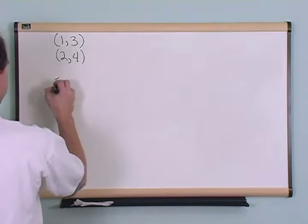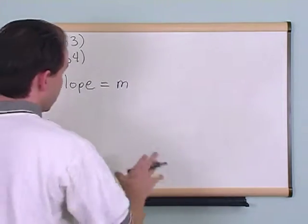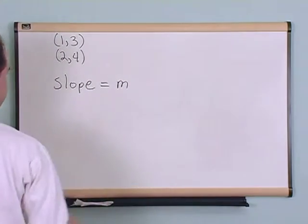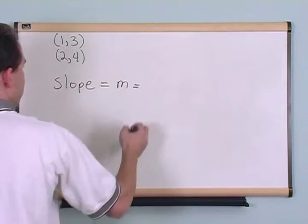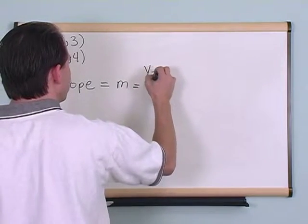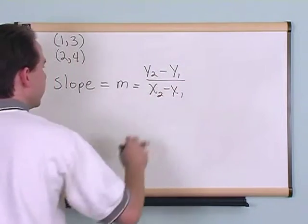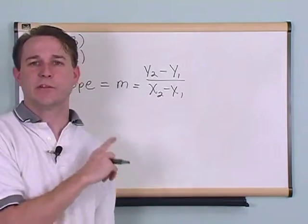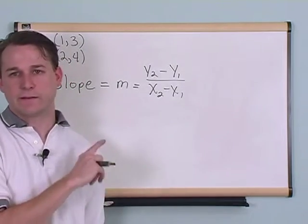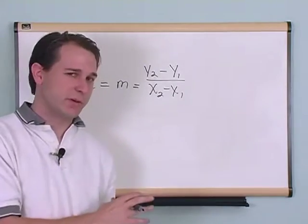The slope is also, for some reason, I don't understand why, but for some reason they use the letter m to describe slope. What it is is what we call y2 minus y1 over x2 minus x1. The only reason I wrote this equation on the board like this, in this method, in this way, is because that's how it's written in the books. It's a very simple equation to understand.